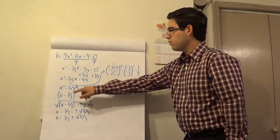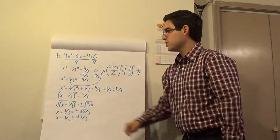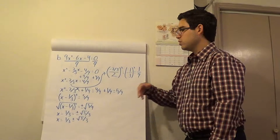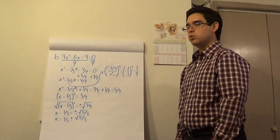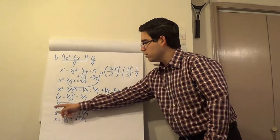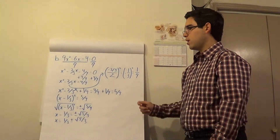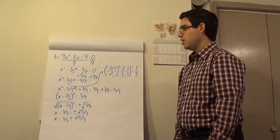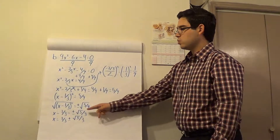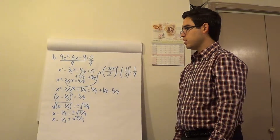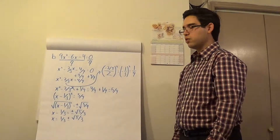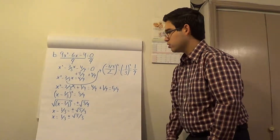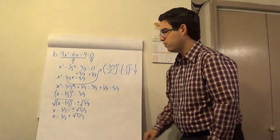Now this left side is a perfect square, so this is going to be x minus 1 third squared is equal to 5 ninths. To solve for x, take the square root of both sides: the square root of x minus 1 third squared is equal to plus or minus the square root of 5 ninths. This is equivalent to x minus 1 third is equal to plus or minus the square root of 5 divided by 3. So our two solutions are x is equal to 1 third plus or minus the square root of 5 divided by 3.